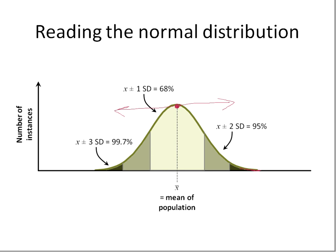If you look at the shaded areas, in the middle we have the mean plus or minus one standard deviation — plus going to the right, minus going to the left. In that range, you accommodate roughly 68% of the population.